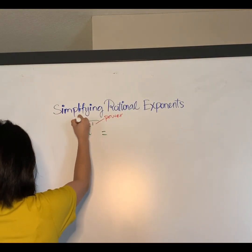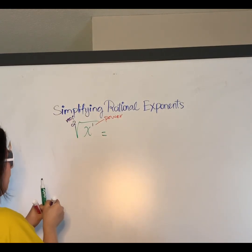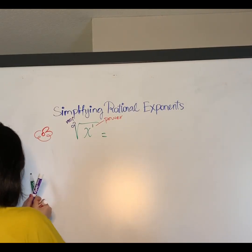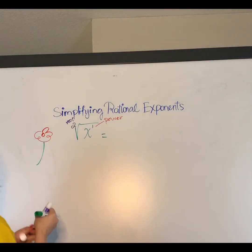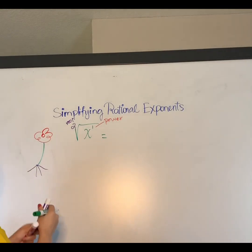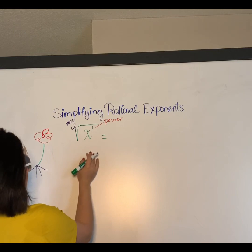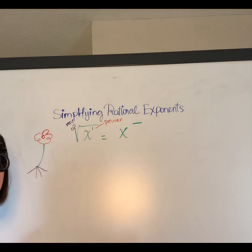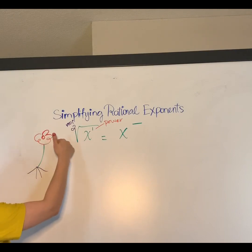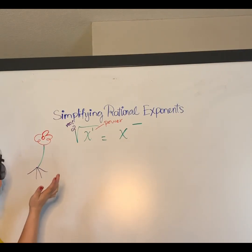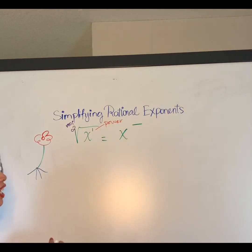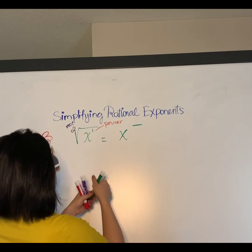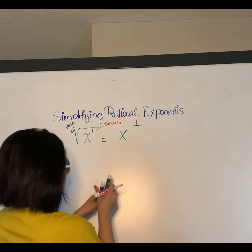Since this is a square root, the root is two. Imagine you have a flower — the root is at the bottom, just like a real flower. The idea is to rewrite the square root of x as a rational exponent, meaning the exponent will be a fraction. The power goes on top and the root goes on the bottom, so we get x to the power of one half.